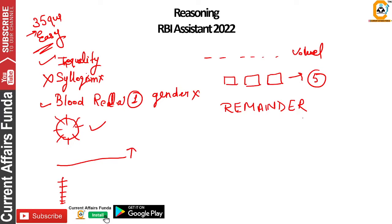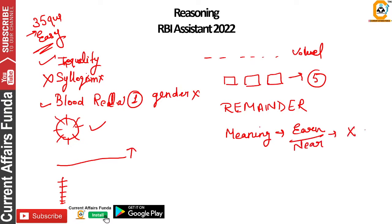One question was asked involving pairs. There were meaningful words to be formed — two words: one was 'earn' and one was 'near.' There were two words, and we had to choose the meaningful one. There was also an 'X' option, meaning if a meaningful word is formed you would choose X.